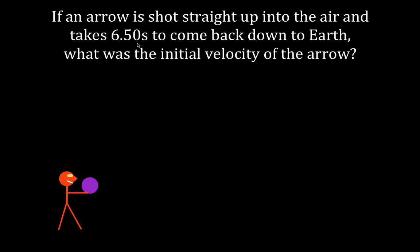So our problem says an arrow. Now, I don't typically just draw an arrow, I just draw either a square or some round object, doesn't matter. A dot. Okay, an arrow is shot straight up in the air, takes 6.5 seconds to come back down. What was the initial velocity of the arrow?